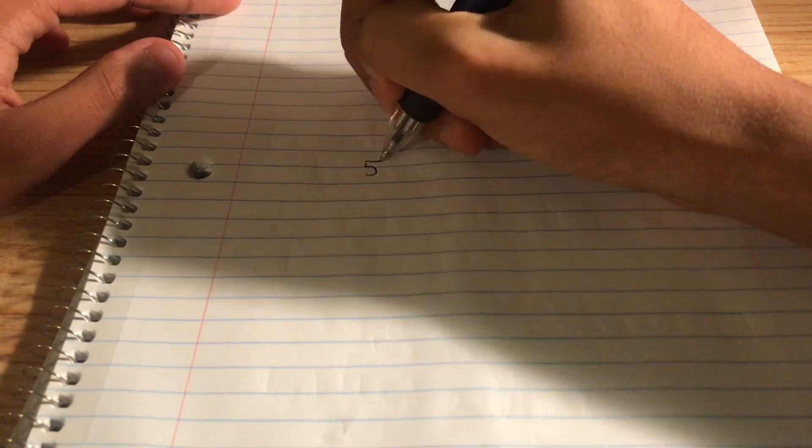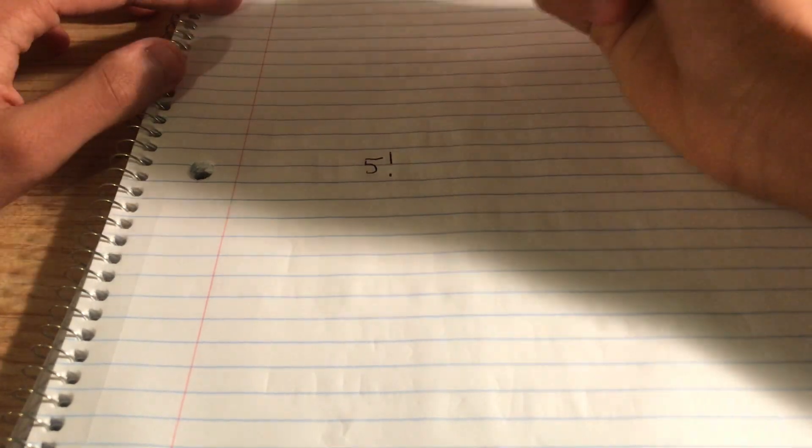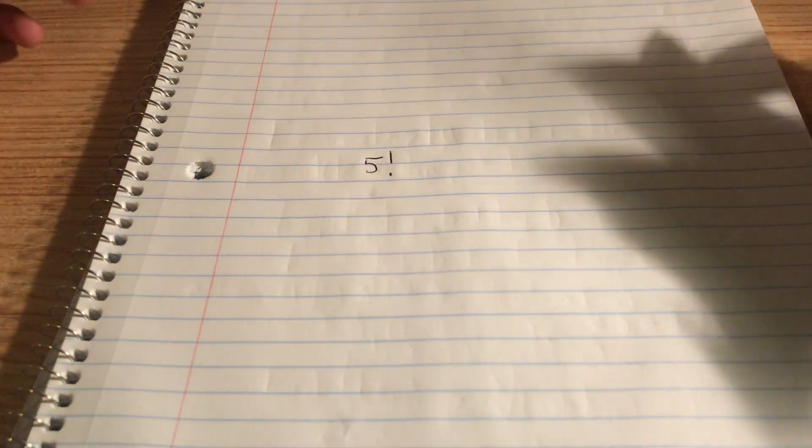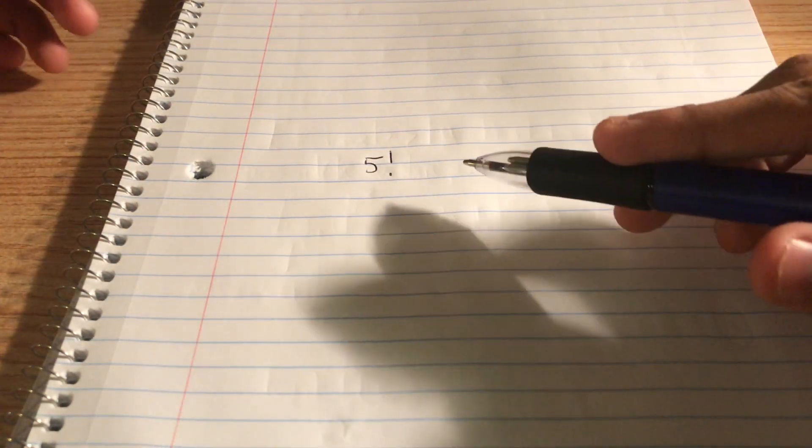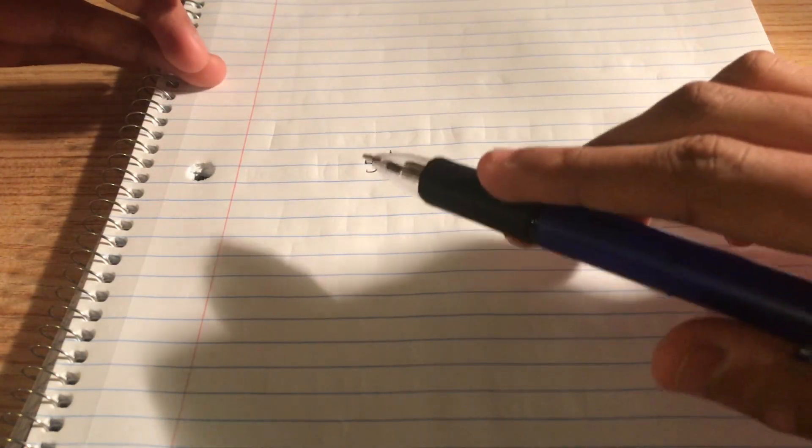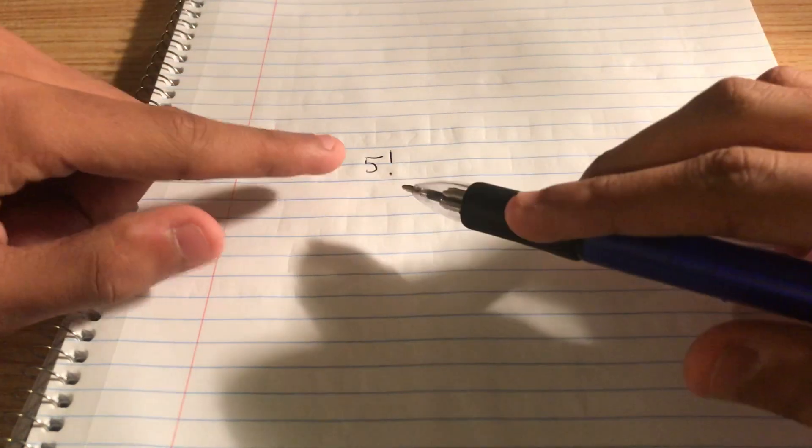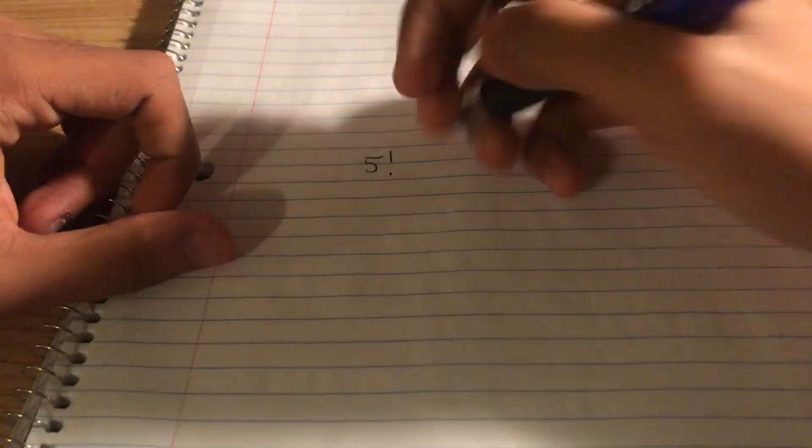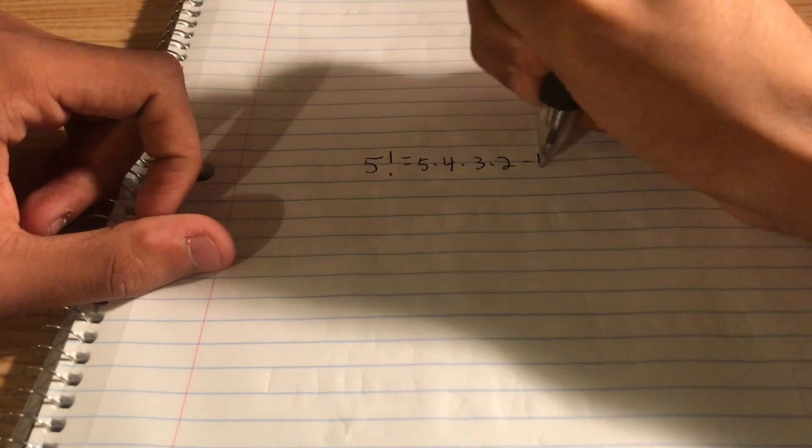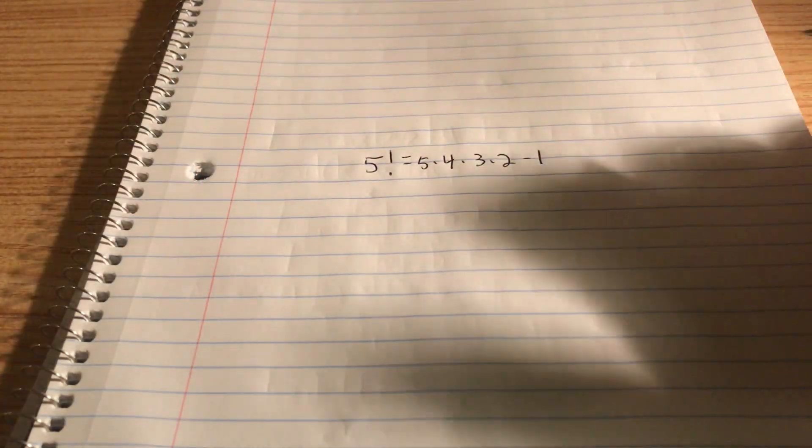Let's say we want to prime factorize 5 factorial. Remember, what is prime factorization? Prime factorization is taking a number and splitting it as the product of certain prime numbers to the power of certain numbers. In this case, 5 factorial. We know that 5 factorial is 5 times 4 times 3 times 2 times 1. So let's just go from there.